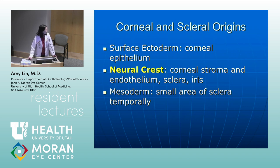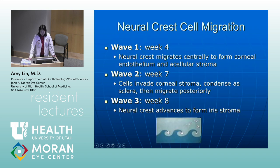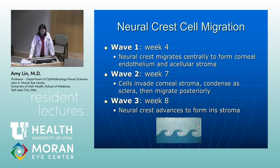The mesoderm contributes to a small area of sclera temporarily. With neural crest cell migration, there are three main waves. Wave one occurs at week four, where the neural crest migrates centrally to form the corneal endothelium and stroma. Wave two comes at week seven, where the cells invade the corneal stroma and condense as sclera, migrating posteriorly. The third wave at week eight, the neural crest advances to form iris stroma.